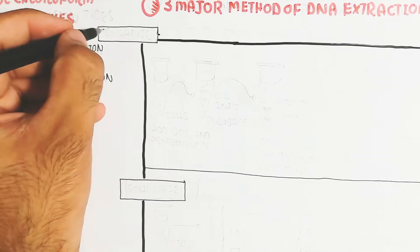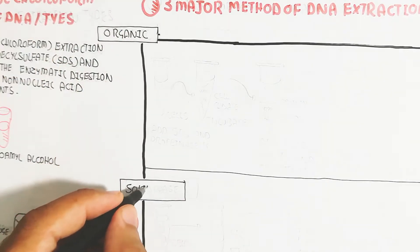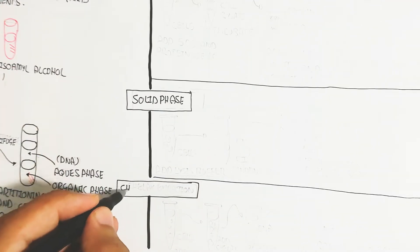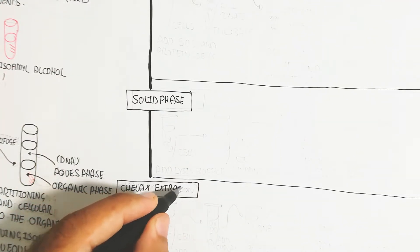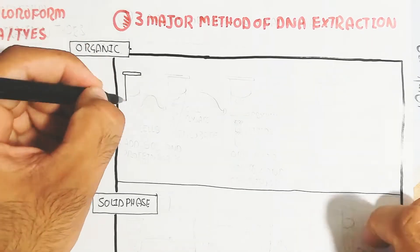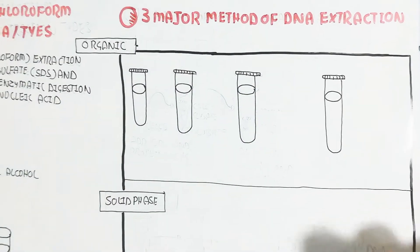The three major methods of DNA extraction are the organic, solid phase, and Chelex extraction. First of all, the organic method.